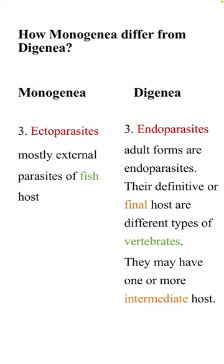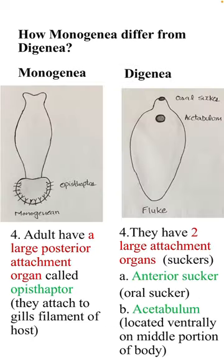Monogenians are ectoparasites — they are mostly external parasites of fish. Adult digenians are endoparasites; their definitive or final hosts are different types of vertebrates, and they may have one or more intermediate hosts.